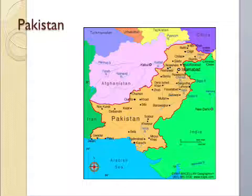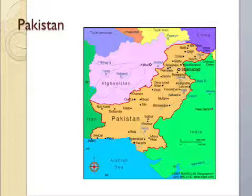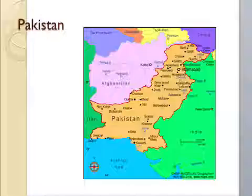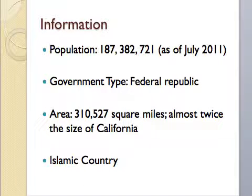I'm going to concentrate on Pakistan. Pakistan is located between India and Afghanistan, and it also borders with Iran. The population of Pakistan is roughly around 187 million. The government type is a federal republic.